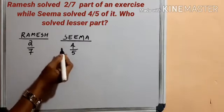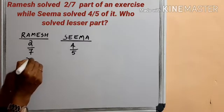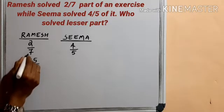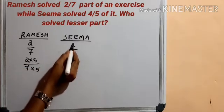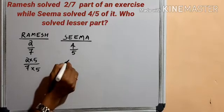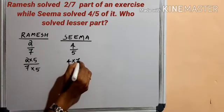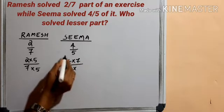By cross multiplication we can easily do this. So next is 2 into 5 divided by 7 into 5. Second fraction 4/5: 4 into 7 divided by 5 into 7.